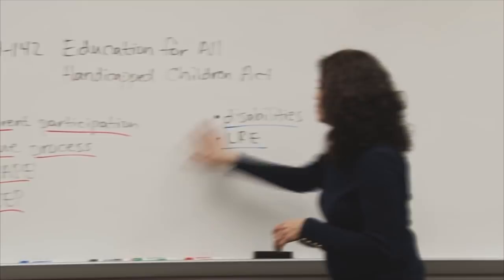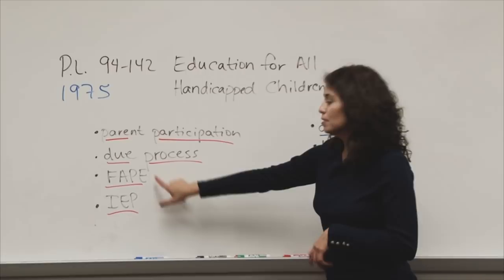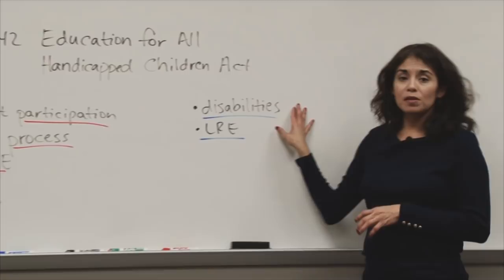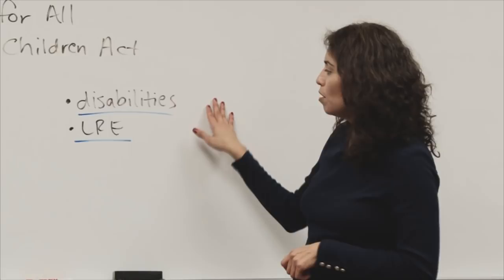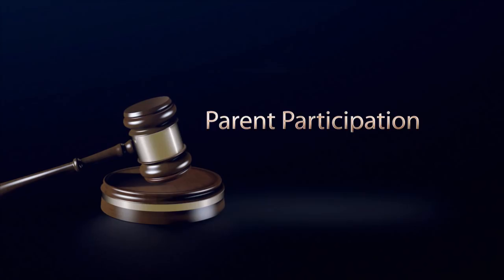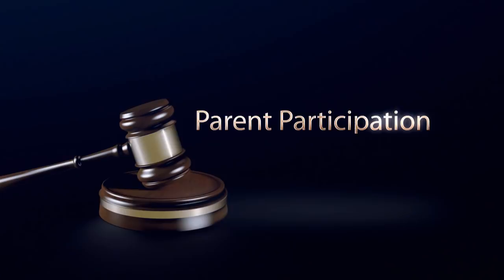When that law was passed, these six principles — the four I talked about: parent participation, due process, FAPE, and IEP — were established. There was also a list of disabilities eligible to receive special education, and the concept of LRE, least restrictive environment, came about because of that legislation.